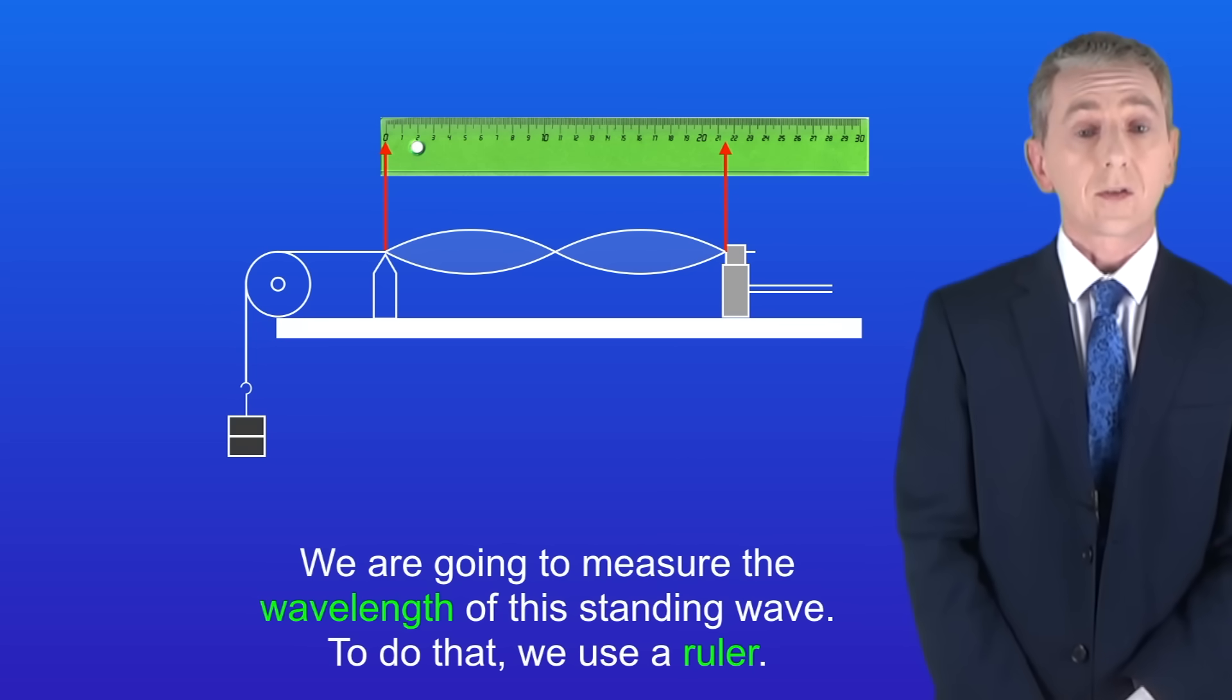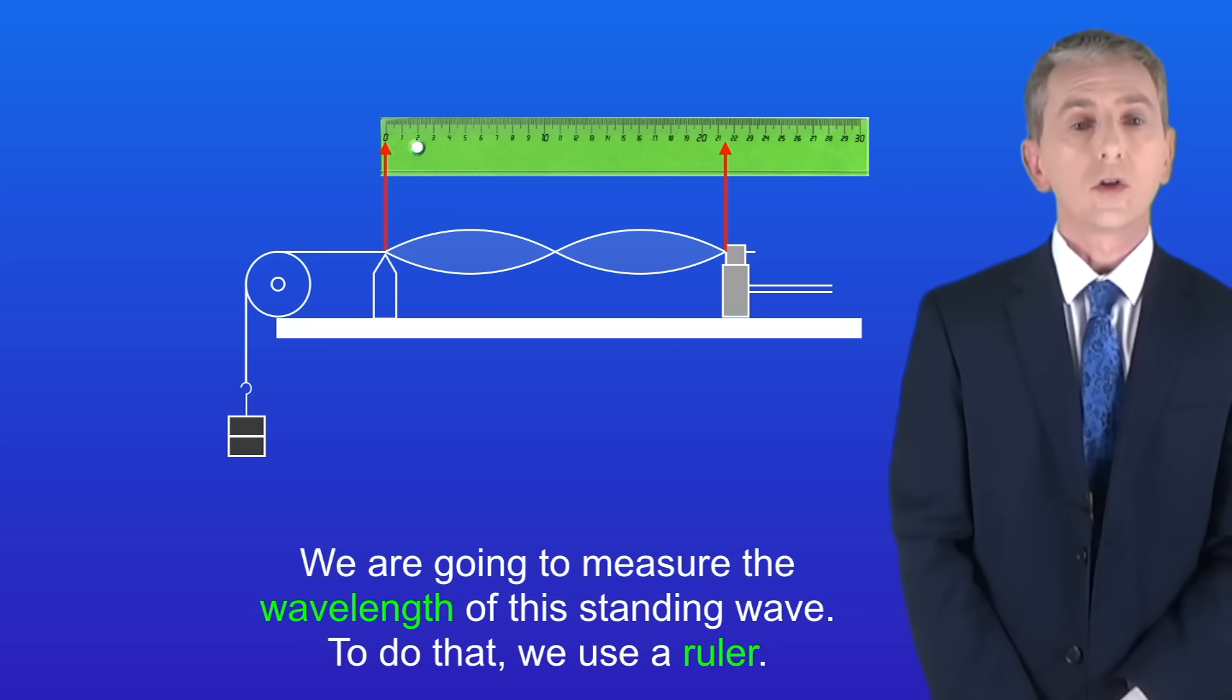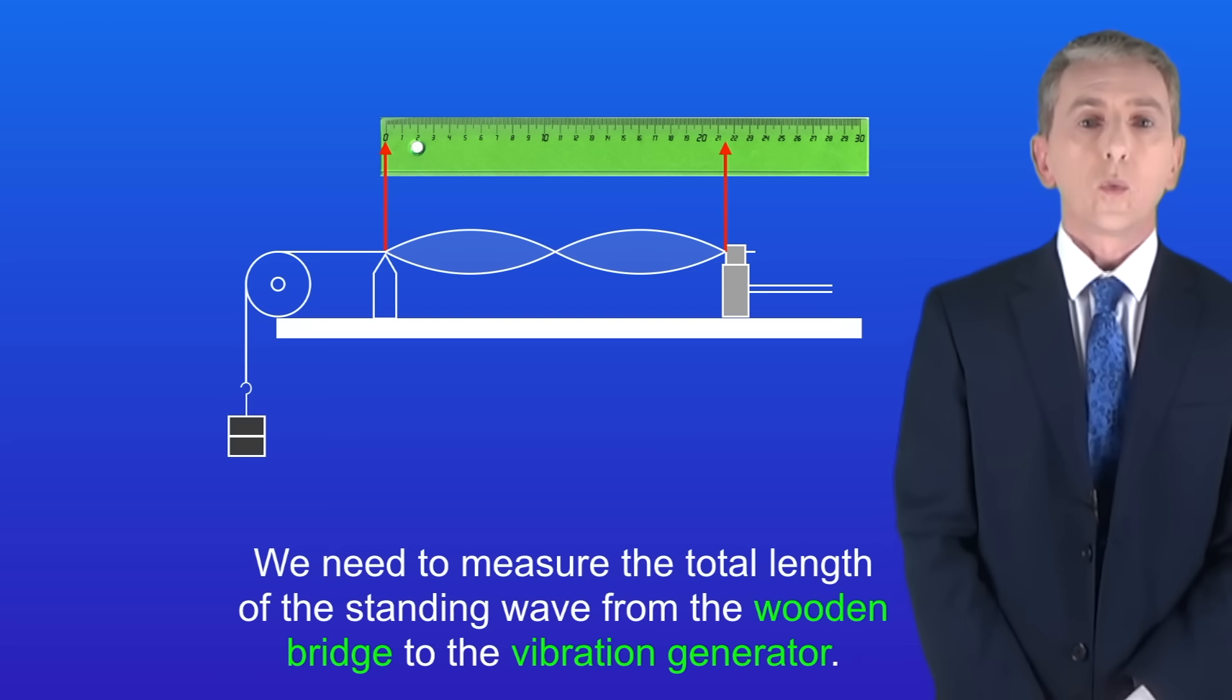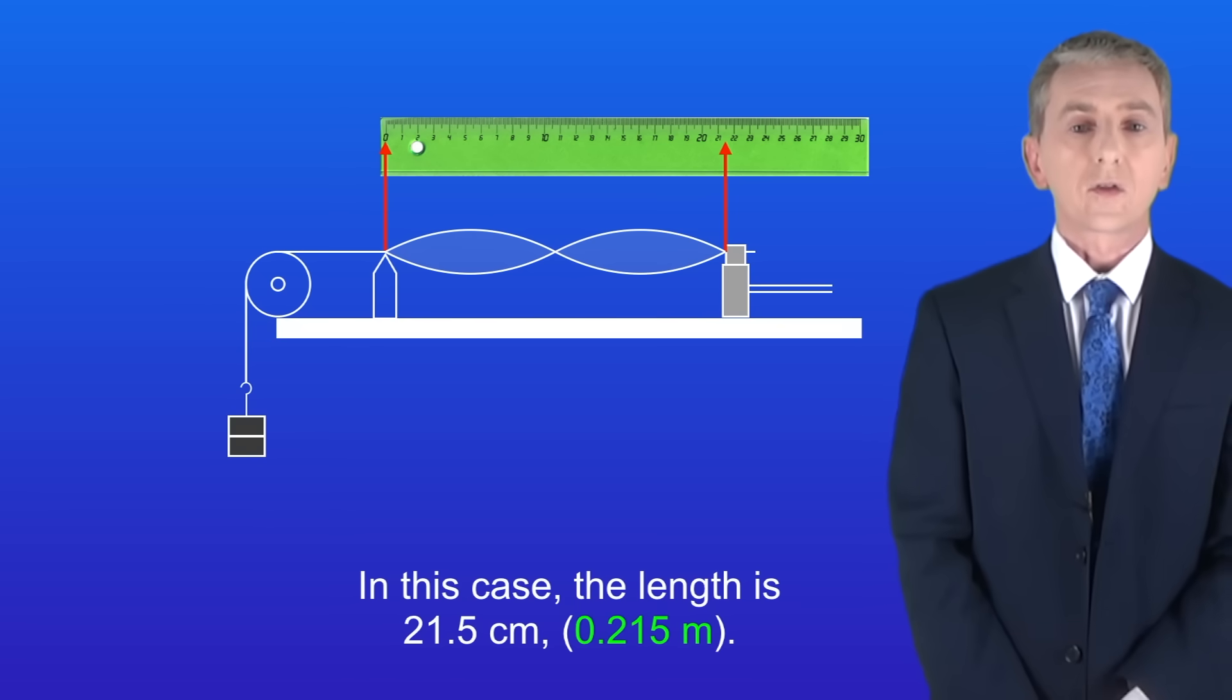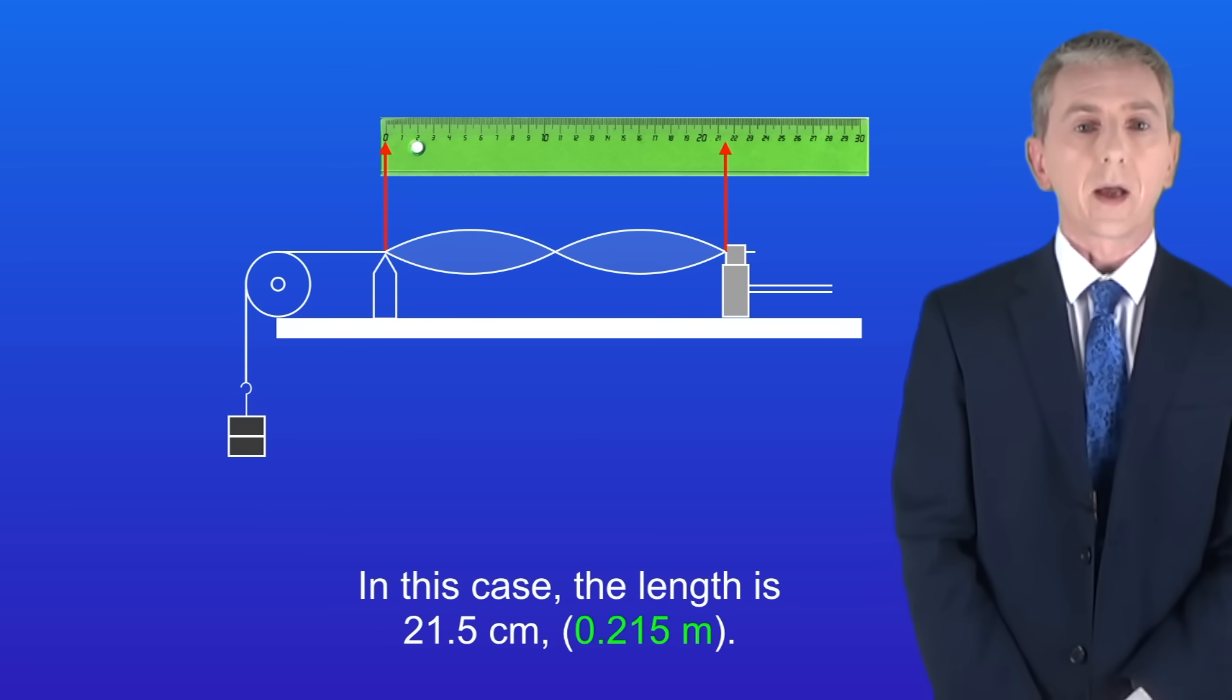We're going to measure the wavelength of this standing wave and to do that we use a ruler like this. We need to measure the total length of the standing wave from the wooden bridge to the vibration generator. In this case the length is 21.5 centimeters, in other words 0.215 meters.